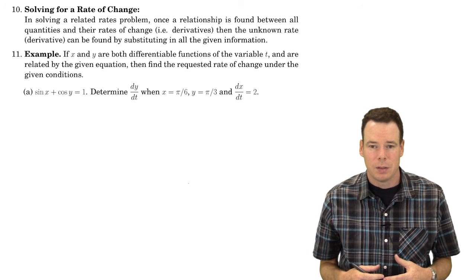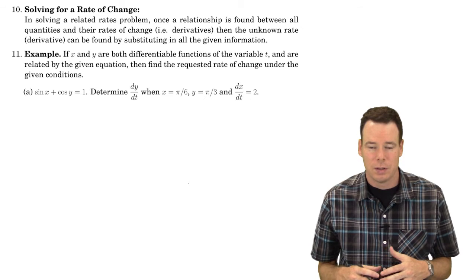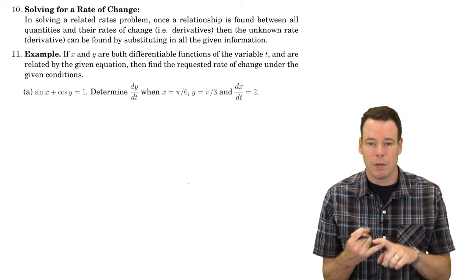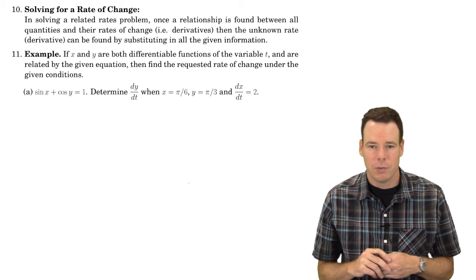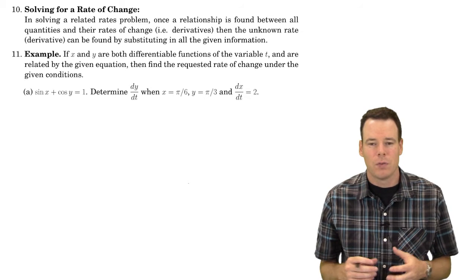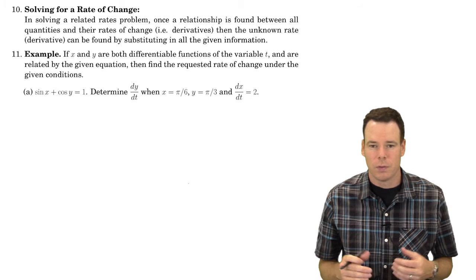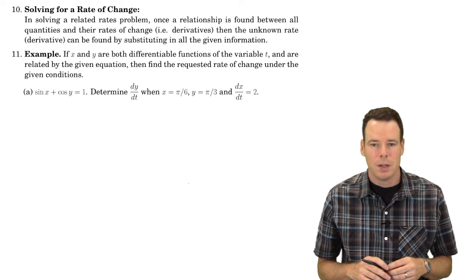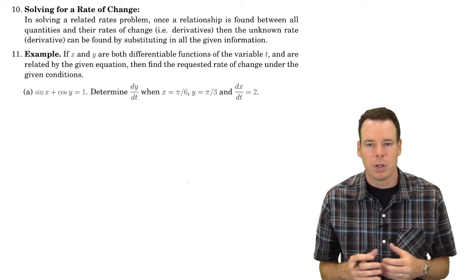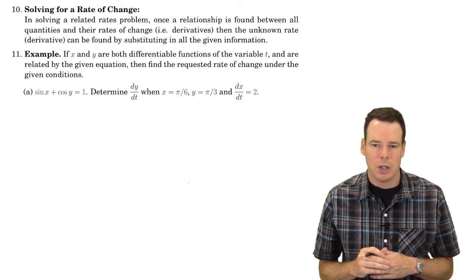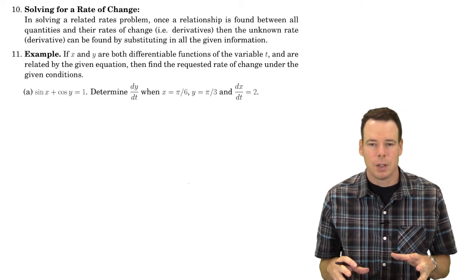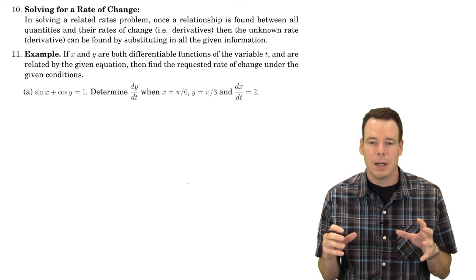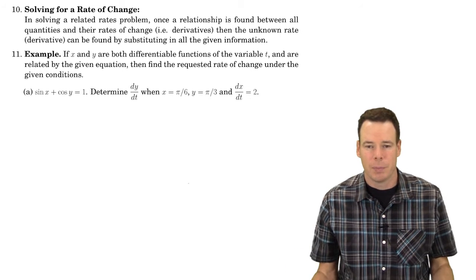When solving related rates problems, we proceed as in previous examples. We're given a word problem, we come up with a relationship between the quantities, we interpret from the verbal description what the derivatives of those quantities are, and then we solve for the rate of change of one of the remaining quantities — that is, the derivative of a remaining quantity. This turns out to be really just an algebra problem, and I want to focus on that aspect before we get into full-blown related rates problems in the next section.